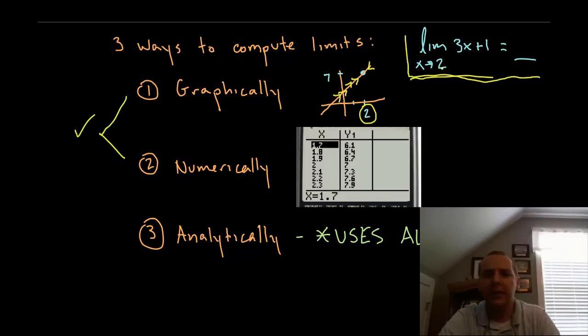A second technique is evaluating limits numerically. The numerical method uses a table in which case you'll put x values in all very close to whatever your c is, in this case 2.